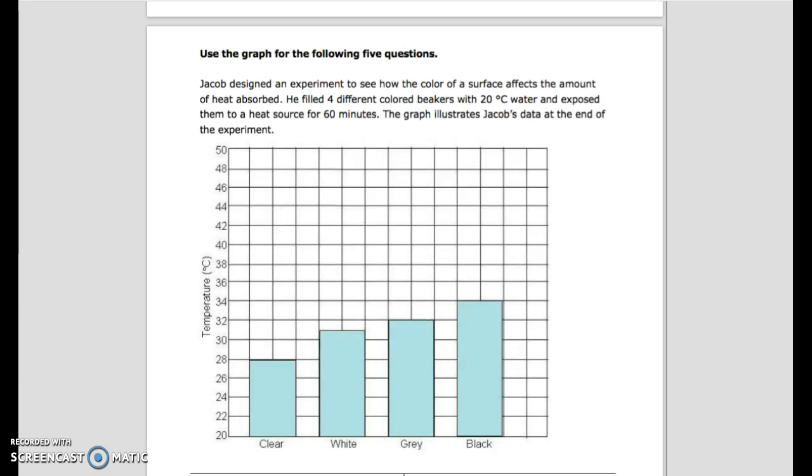Use the graph for the following 5 questions. Jacob designed an experiment to see how the color of a surface affects the amount of heat absorbed. He filled 4 different colored beakers with 20 degrees Celsius water and exposed them to a heat source for 60 minutes. The graph below illustrates Jacob's data at the end of the experiment. Temperature: Clear, White, Gray, Black.